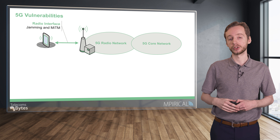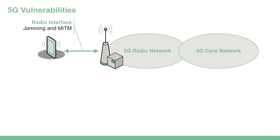Jamming can lead into what we call a downgrade attack, where the user equipment is downgraded to using 4G, for example, and then a malicious actor can exploit vulnerabilities that exist for 4G. We also have man-in-the-middle attacks, where a malicious actor can eavesdrop on the communication between the user equipment and the cell site.